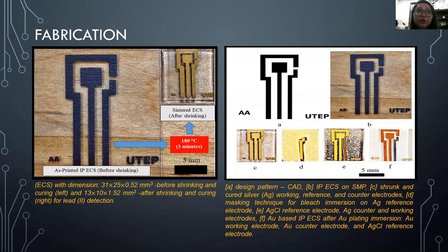After that, it was miniaturized, sintered, and cured at 180 degrees centigrade for three minutes simultaneously. Silver chloride reference electrode was fabricated using masking and chlorination technique, and at the end, gold counter and working electrodes were fabricated by applying gold immersion technology.